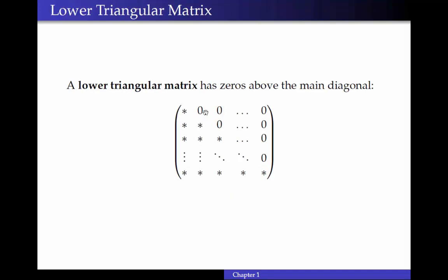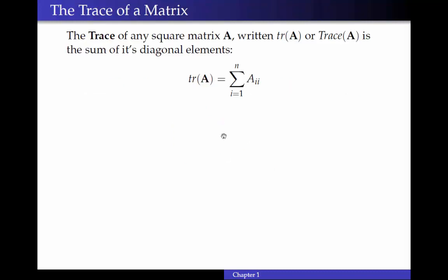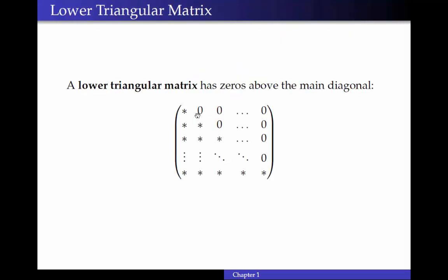Similarly, a lower triangular matrix will have zeros above the main diagonal. So all the potentially non-zero elements are in the lower triangular portion of the matrix.